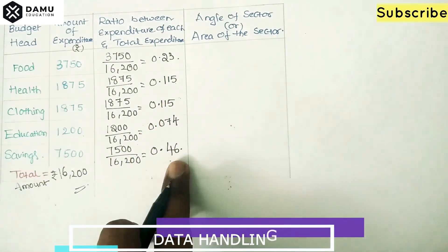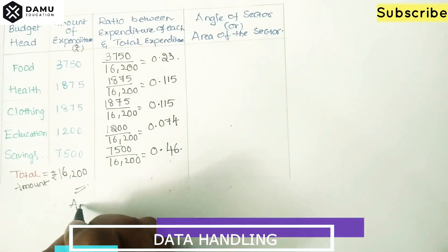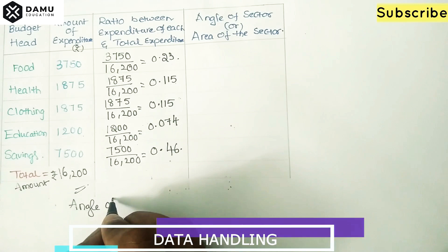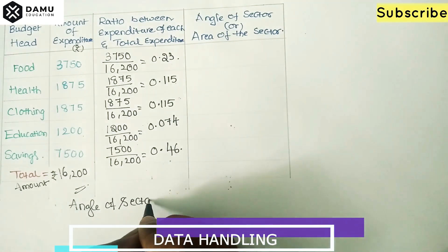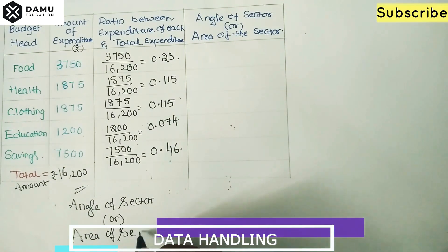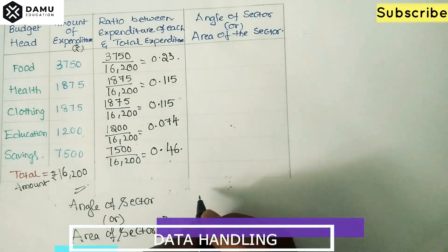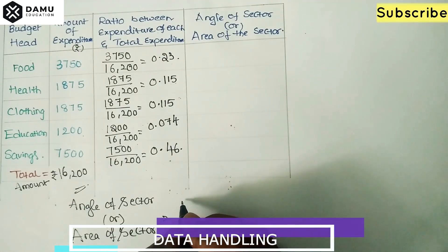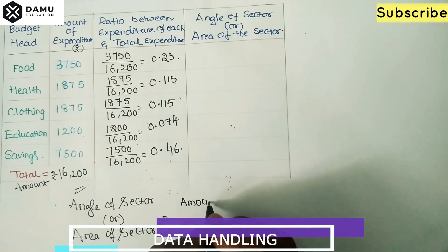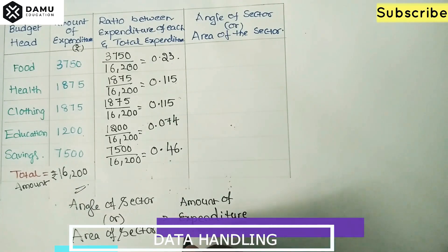Next we calculate the angle of each sector. The formula for the angle of a sector is: the ratio of the amount of expenditure on each item to the total amount, multiplied by 360 degrees.